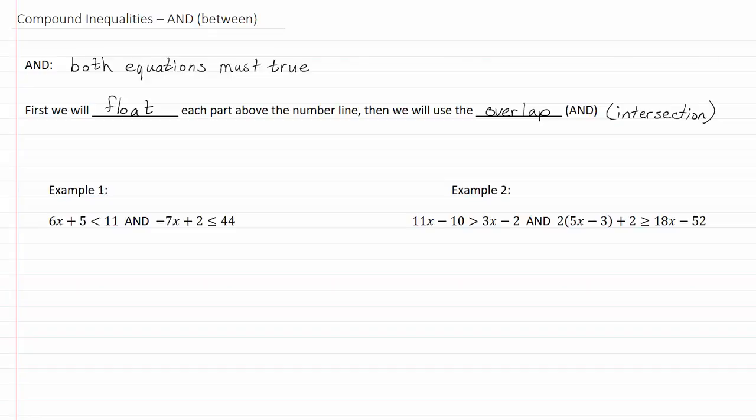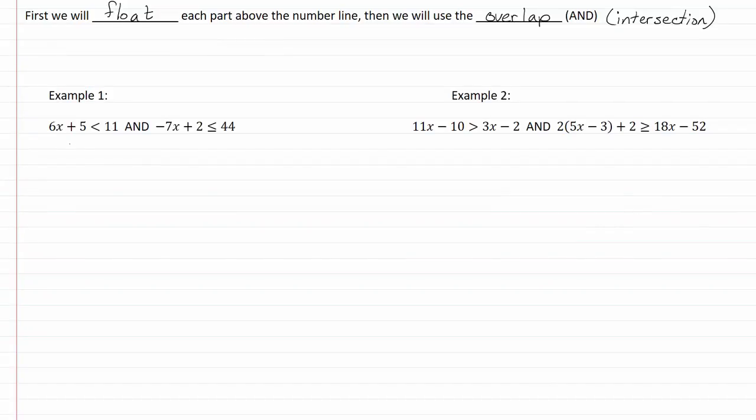Let's take a look at our first example. So we solve: we get 6x is less than or equal to 11 minus 5, which would give us 6. Divide by 6, and x will be less than 1.